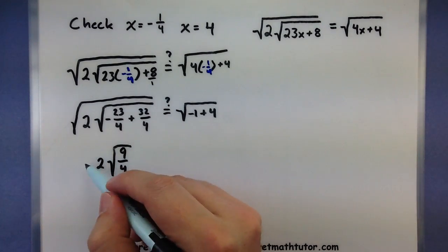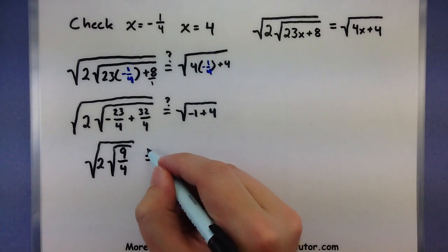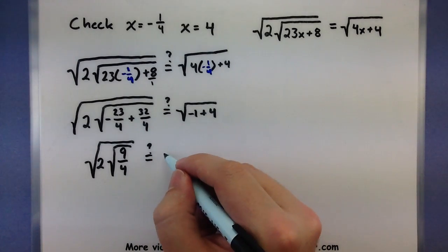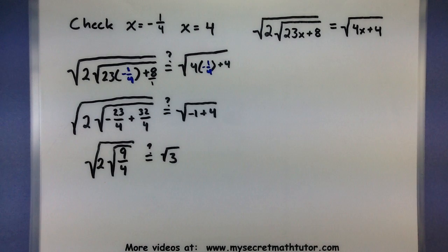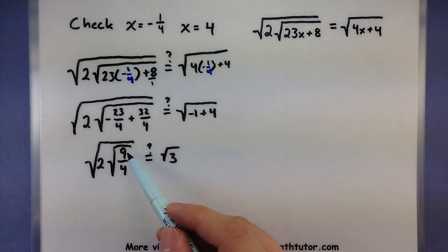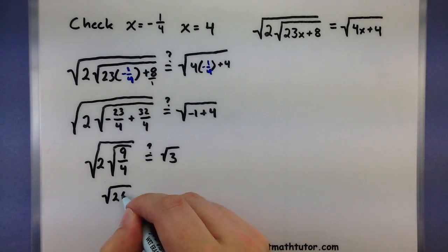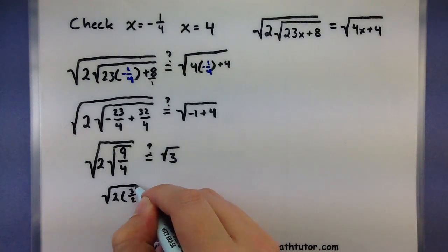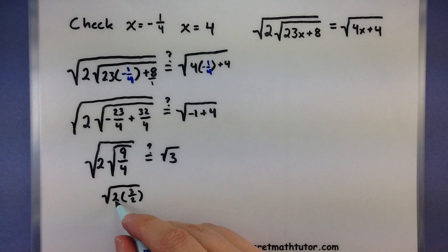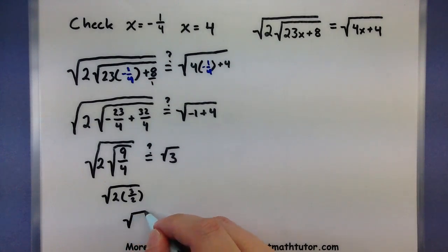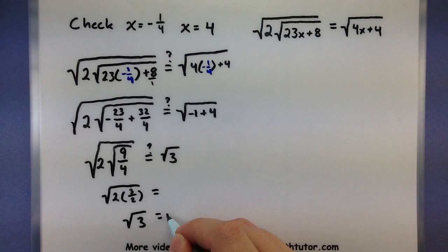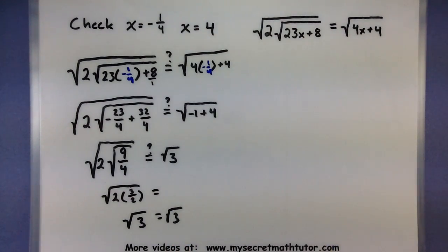Again, it's being multiplied by 2. And another square root. Negative 1 plus 4. Square root of 3. So, when we take the square root of a fraction, square root of the top, and square root of the bottom. So, this will be the square root of 2 times 3 halves. And multiplying 2 by 3 halves, I just have a 3. So, after plugging it in, I get the square root of 3 is equal to the square root of 3. And I can see that, yes, those two things are equal. So, x equals negative 1 fourth is one of my solutions.